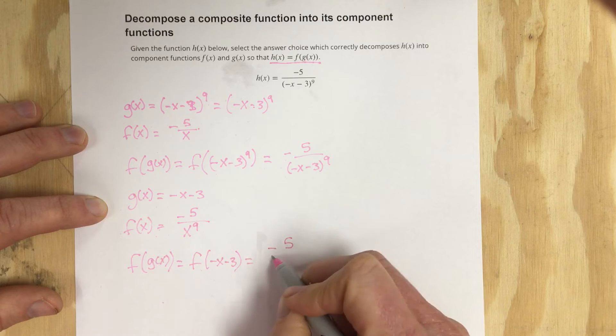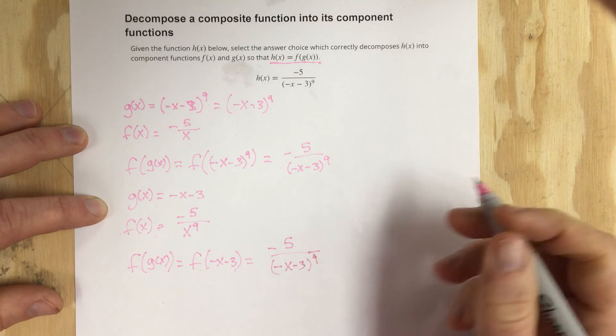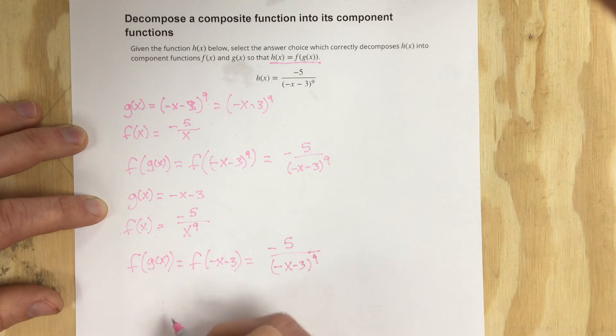That'd be negative 5 over negative x minus 3 in parentheses to the 9th power. So I again get the h of x function.